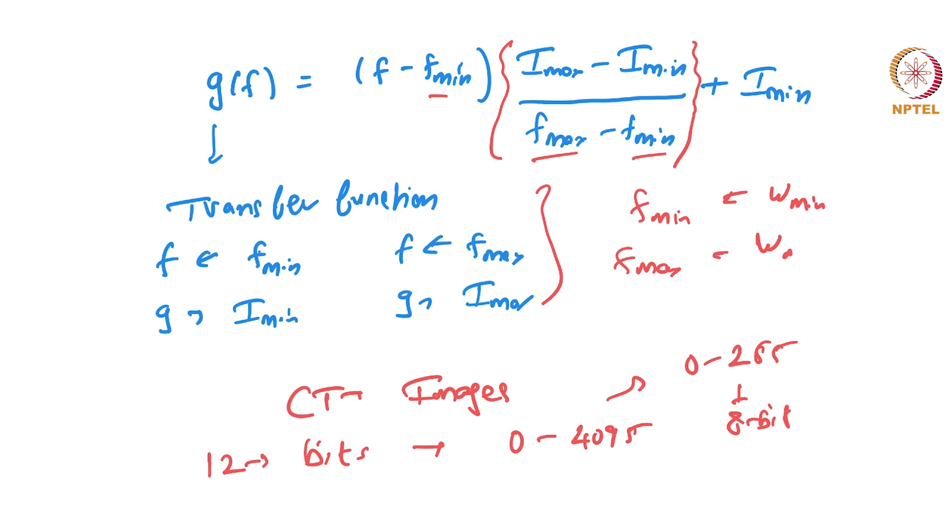Because in the original image f, anything less than w_min might not be meaningful—it could be some artifact, some error. Anything greater than w_max might not be meaningful also. So when you do this kind of mapping, you have to make sure you do a thresholding operation also.